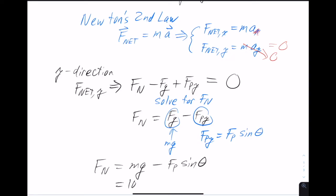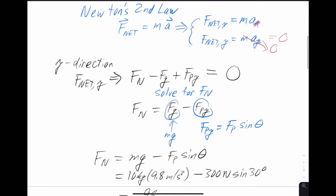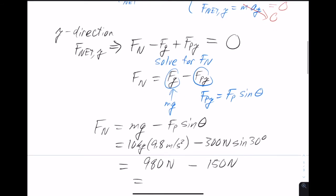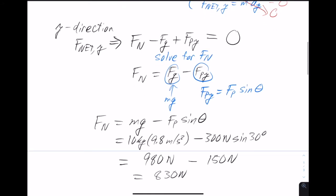Plugging in the numbers: mass is 10 kilograms, g is 9.8 meters per second squared, the pulling force is 300 newtons, and sine of 30 degrees. So mg gives 98 newtons... this term is 980 newtons, and 300 times sine of 30 gives 150 newtons.